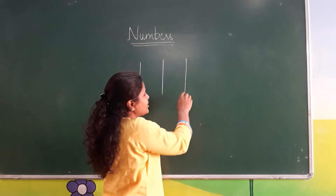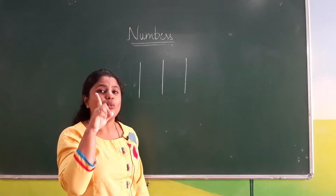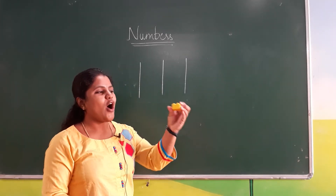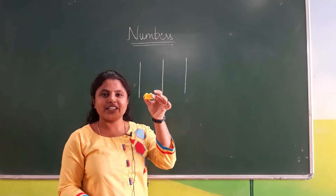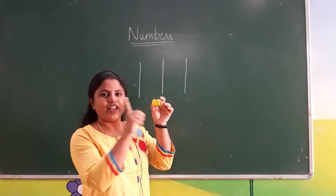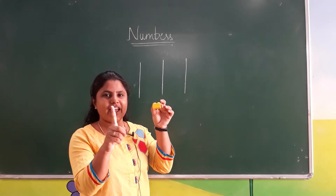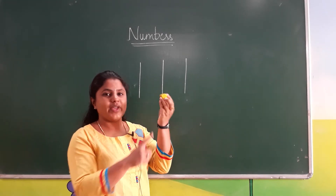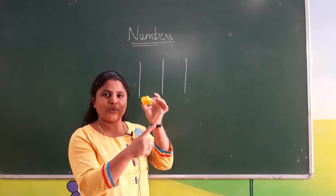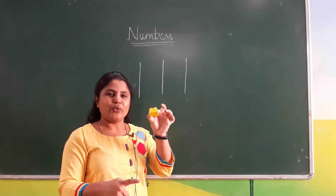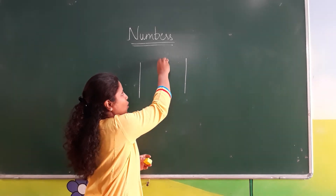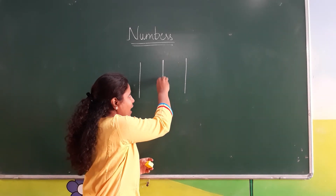Which number is this? 1. See, how many objects are there here? Only one object. How many objects? 1. Only one. Which number is this? 1.